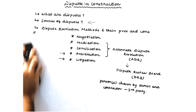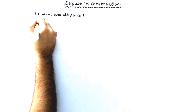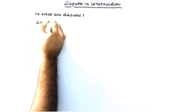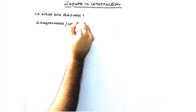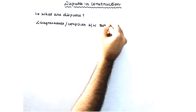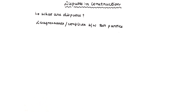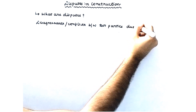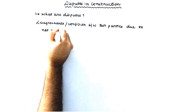Moving on to disputes — what are disputes? They are simply disagreements or conflicts between two parties. In construction we are usually dealing with contractors versus client. These two parties — most probably contractors versus client, and sometimes designers and contractors — are not agreeing on certain claims.